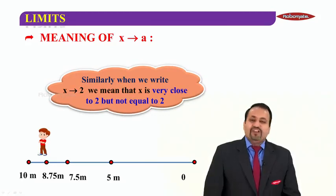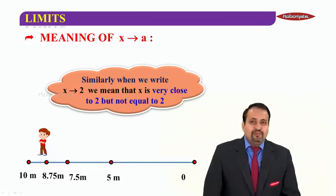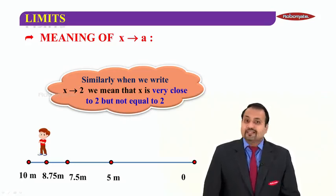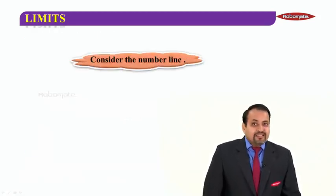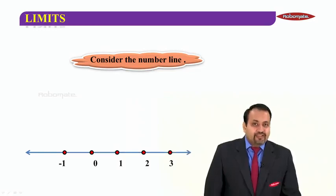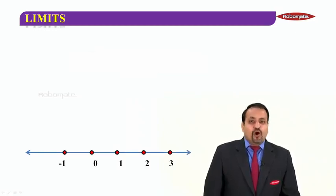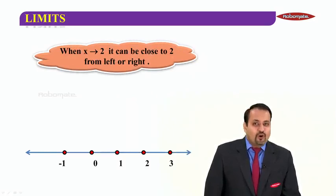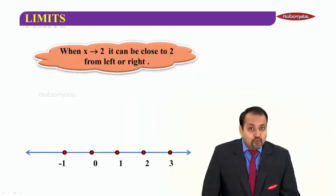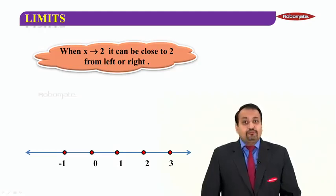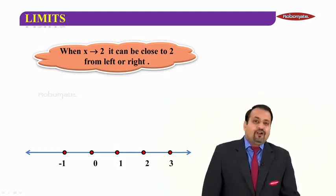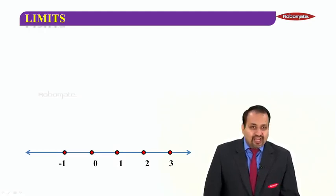Similarly, when we write X tending to 2, we mean that X is very close to 2, but it is not equal to 2. Consider the number line. We have minus 1, 0, 1, 2, 3 and so on. When X tends to 2, it can be close to 2. When I say close to 2, it can be from the left side or it can be from the right side also.